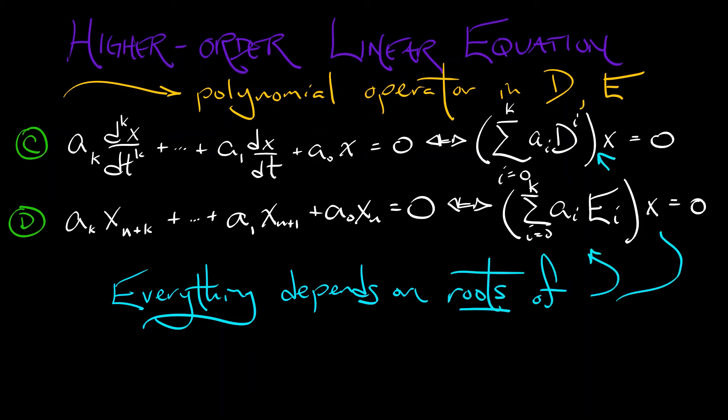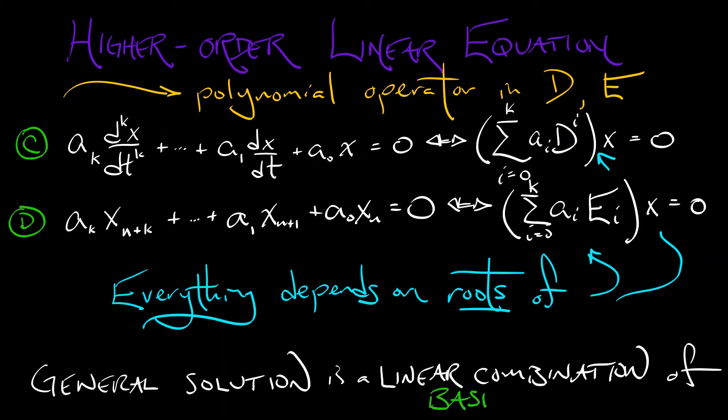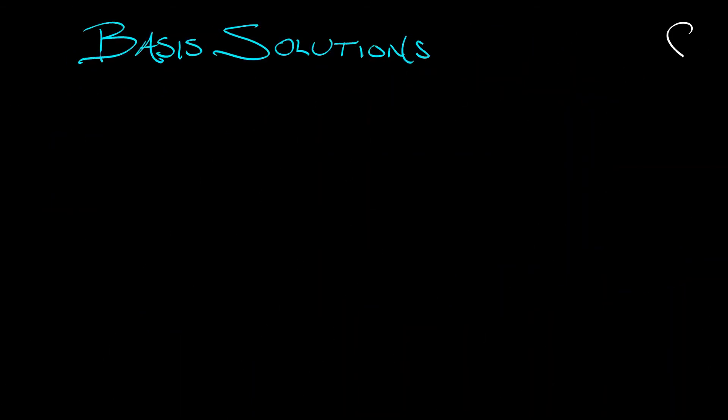everything in the solution depends on the roots of this polynomial, this characteristic polynomial that is used to define the evolution operator. The general solution to a higher order linear equation is going to be a linear combination of basis solutions. What are the basis solutions?